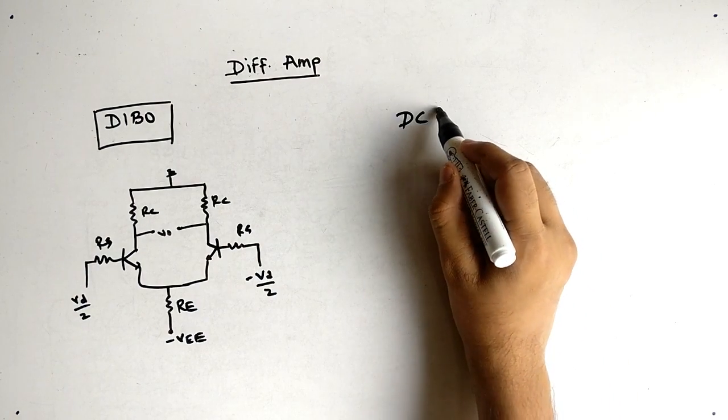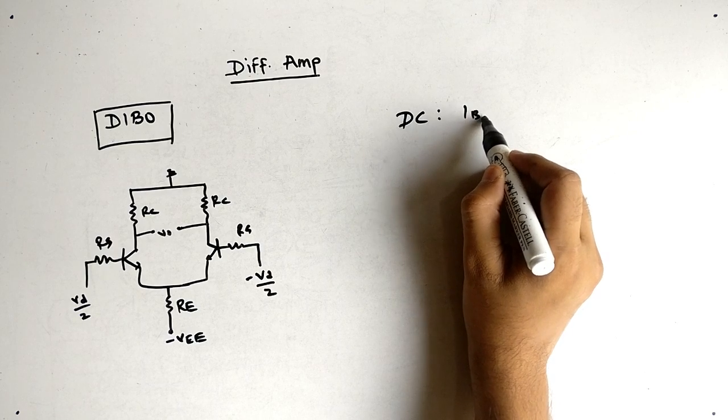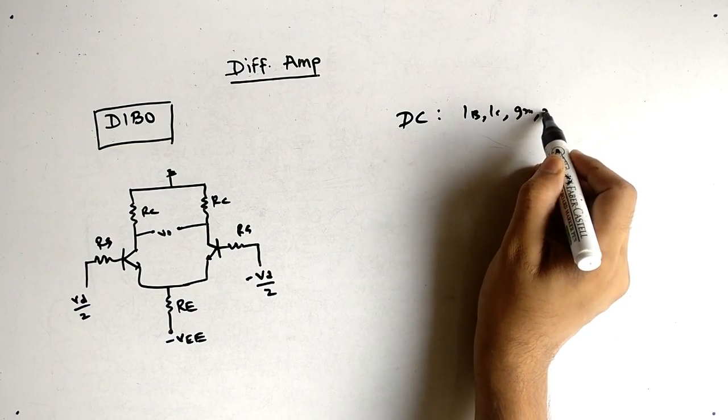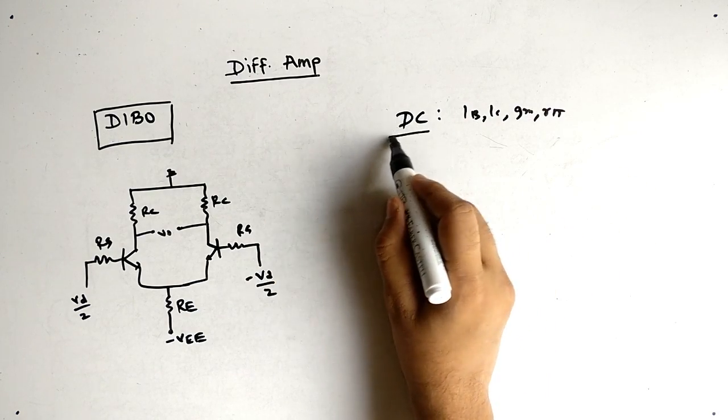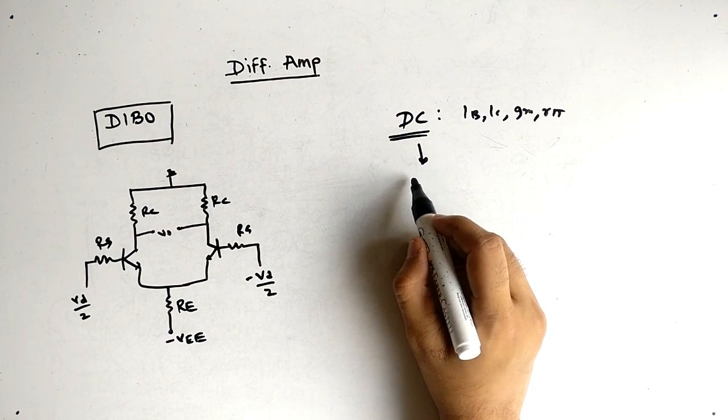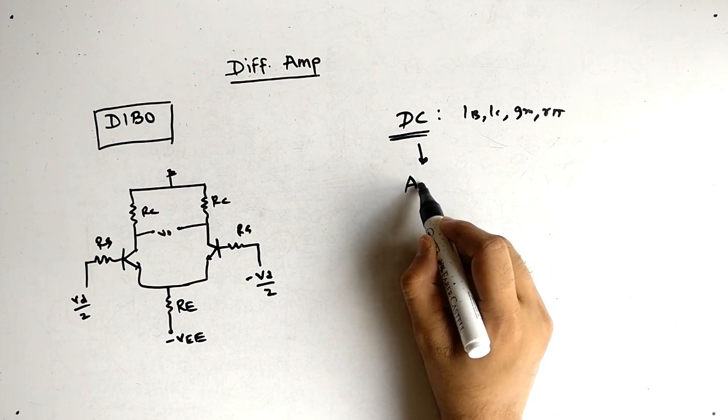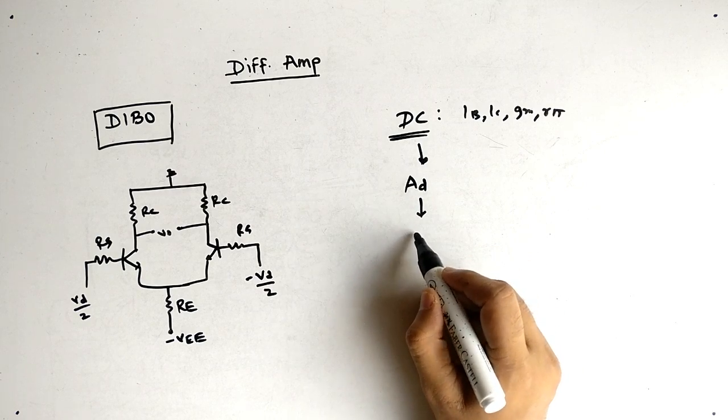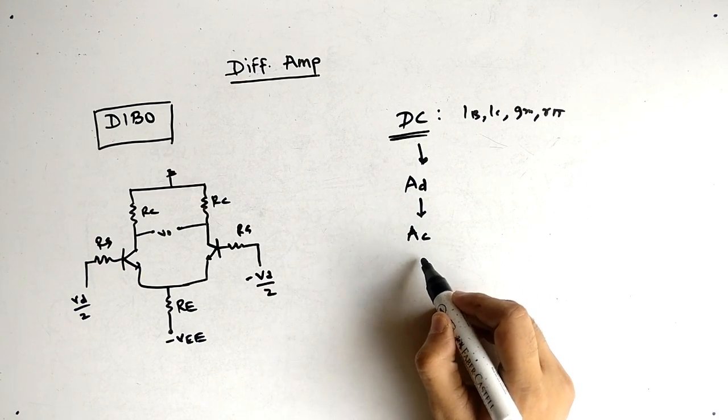Now in this video we will see how to find the DC analysis to get the value of IB, IC, GM and Rpi. First step we will do this, then we will go for the AC analysis to find the differential gain, then we will also find the common mode gain, then we will find CMRR, we will also find input resistance and output resistance.